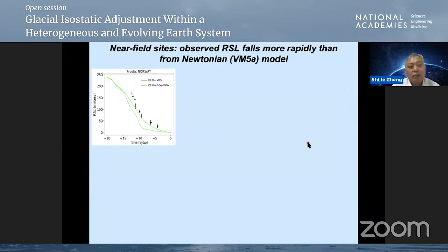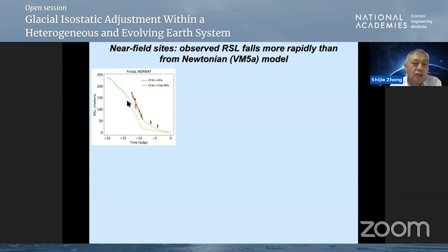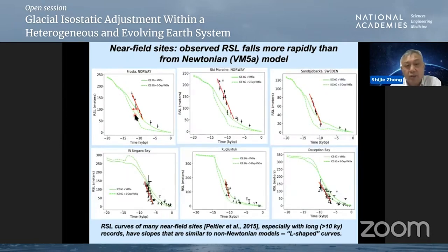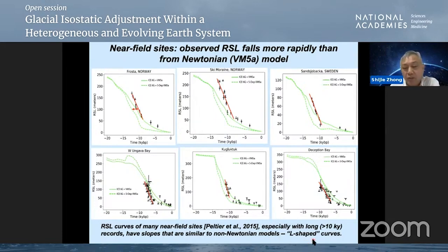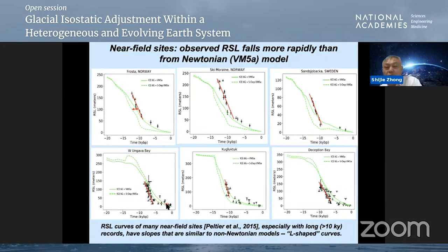Looking at the data: at the Norway site, the actual sea level data falls much more rapidly than the prediction from the Newtonian model (ICE-6G plus VM-5A), and the slope of the sea level curve is actually quite similar to what the non-Newtonian model predicts. Looking at many other sites — in Scandinavia and North America — you often see what we call L-shaped curves: sea level falls very rapidly at certain times and then goes to a much gentler slope. We think this may be indication that non-Newtonian rheology is at work.